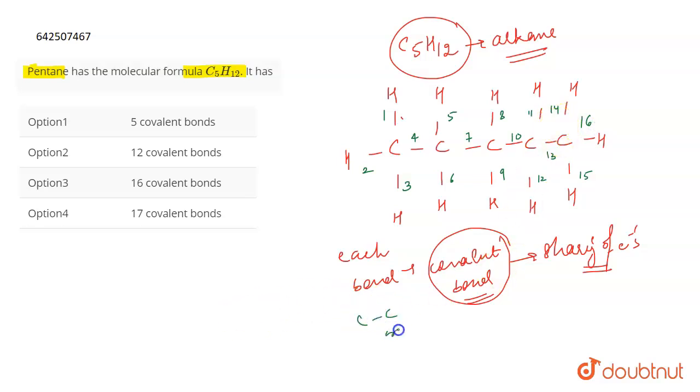So all the C-C bonds, all the C-H bonds, they are covalent bonds. So how many bonds do you get in total? You get 16 as your answer. 16 covalent bonds will be the correct answer, which is given in option number 3, and hence option 3 is the correct answer for the question.